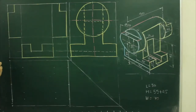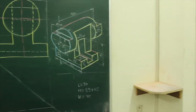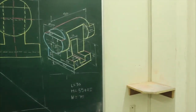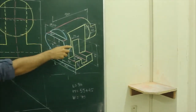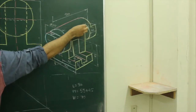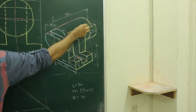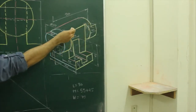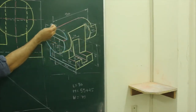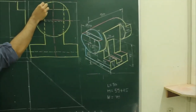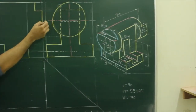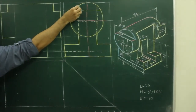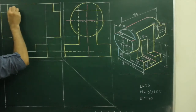Now, when you see from the front, we don't know this height. You will get it from the intersection point in the side view — where it is intersecting — from that we can project horizontally to get the required height.